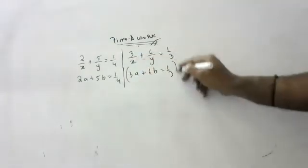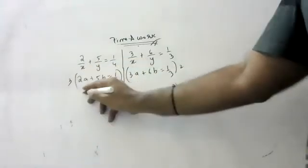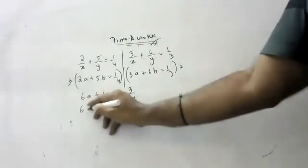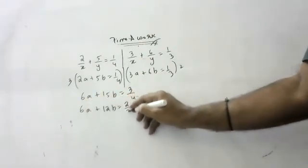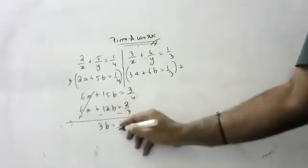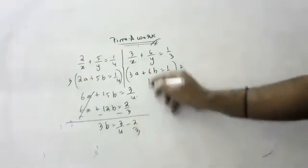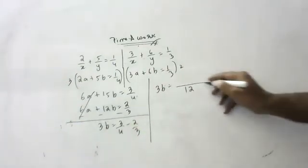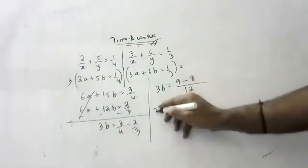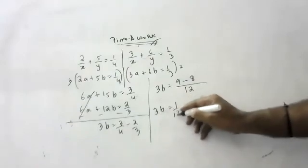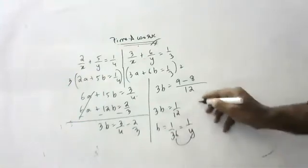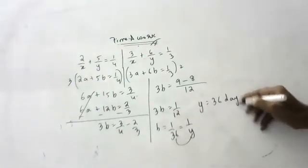The equations are: 2a + 5b = 1/4, and 3a + 6b = 1/3. Multiply the first by 3: 6a + 15b = 3/4. Multiply the second by 2: 6a + 12b = 2/3. Subtracting: 3b = 3/4 − 2/3 = 9/12 − 8/12 = 1/12. So b = 1/36, meaning 1/y = 1/36, therefore y = 36. One man alone takes 36 days.